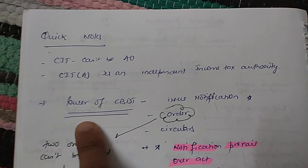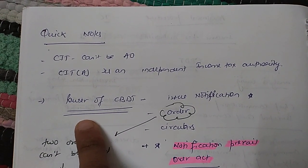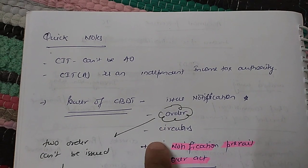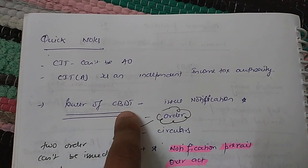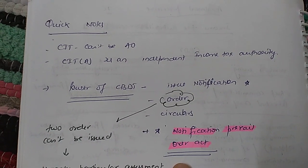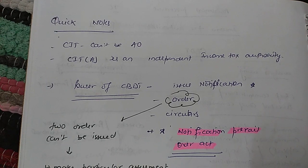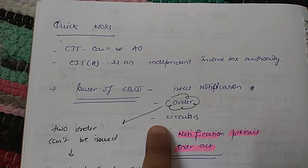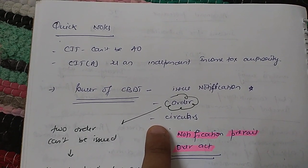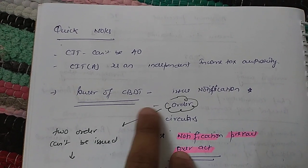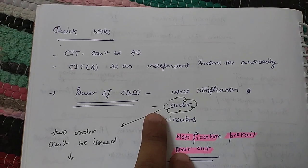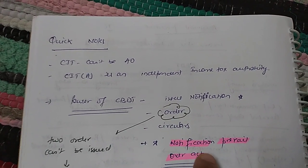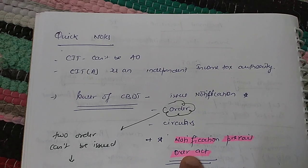Now let's discuss the powers of CBDT — the Central Board of Direct Taxes. CBDT can issue notifications, orders, and circulars. Notifications issued by CBDT prevail over the Act. For example, the normal return filing deadline for an individual is 31st July, as discussed in our last session. But if CBDT issues a notification to extend that deadline, then the extended deadline prevails over the Act.